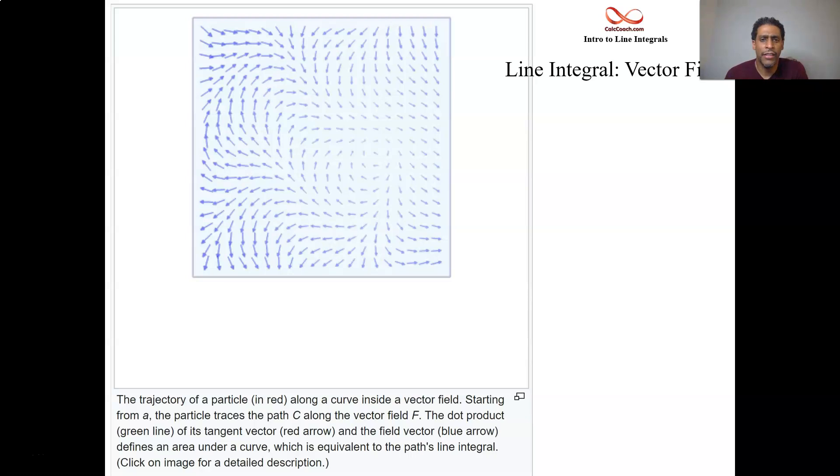Here's an example of a vector field, this is once again straight from Wikipedia. Now, what are you measuring when you change perspectives, when you start looking at a vector field line integral as opposed to a scalar function line integral?